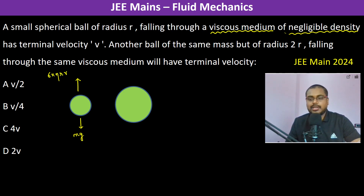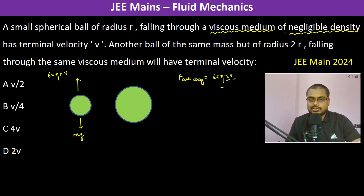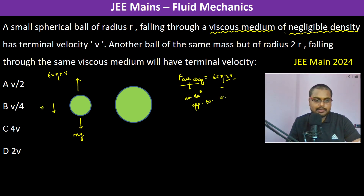The air drag force is 6π η r V, where η is the coefficient of viscosity, r is the radius of the ball, and V is the velocity of the ball. This drag force is applied in the direction opposite to the velocity.